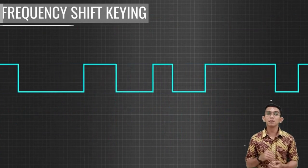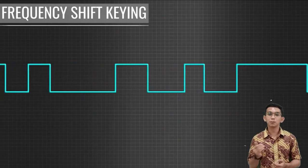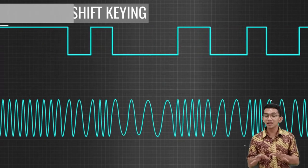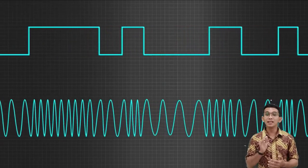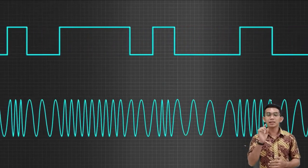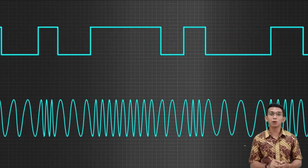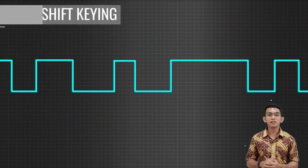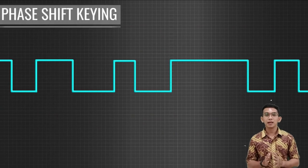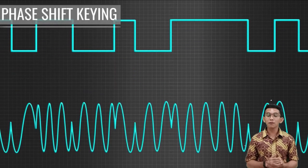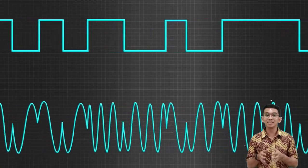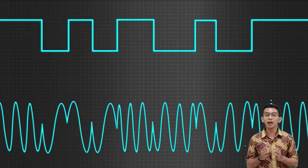The next technique is called frequency shift key. Phase shift key is where the phase of the carrier signal is changed by 180 degrees when the digital pulse moves from one to zero or zero to one.